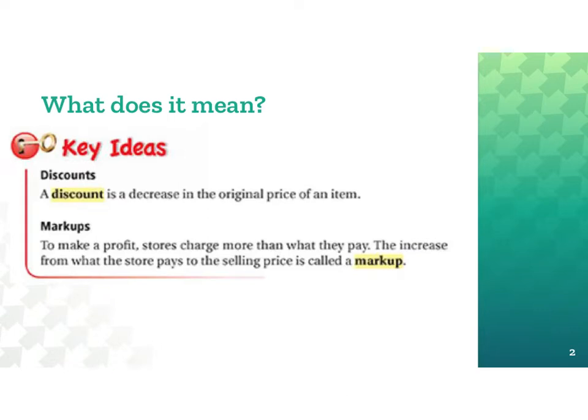A discount is a decrease in the original price of an item, whereas a markup is an increase in the original price of an item. A markup happens when a store buys a certain item and then wants to make a profit, so they increase the price before they sell it.